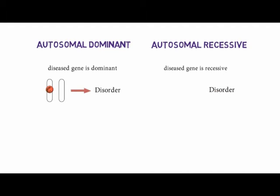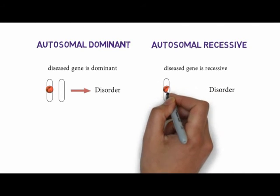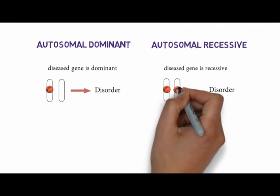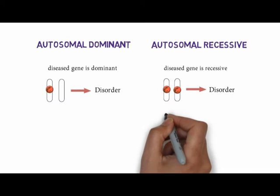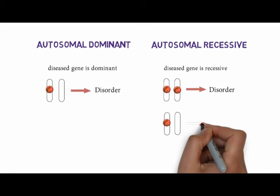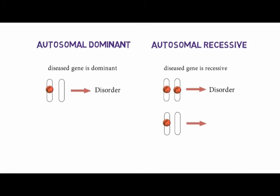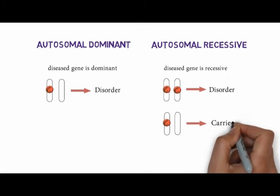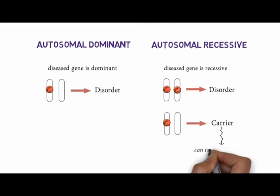Whereas in autosomal recessive, the disease gene is recessive over the normal gene. That means in order to have an autosomal recessive disorder, you need to have two copies of the disease gene. If there's only one disease gene, the normal gene will dominate and the disease gene will not be able to express, but that individual becomes a carrier which has the ability to transmit the disease to the next generation if the partner is either a carrier or is diseased.